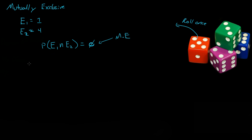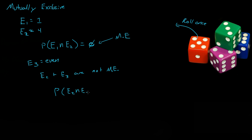Now something that is not mutually exclusive: if we have Event 3, which is getting an even number, then Event 2 and Event 3 are not mutually exclusive. So if we took the probability of Event 2 intersect Event 3, that is equal to 1 out of 6. Since that is not null, these are not mutually exclusive.